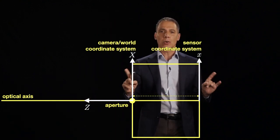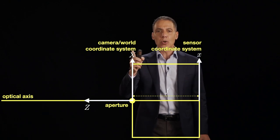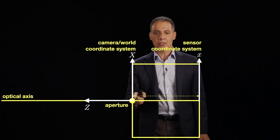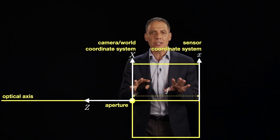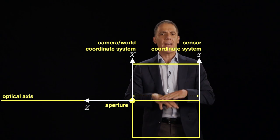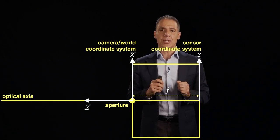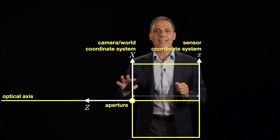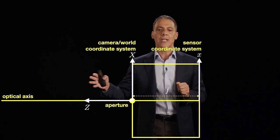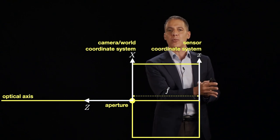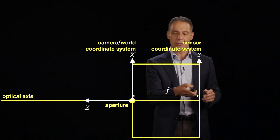We're going to have two coordinate systems. Notice I'm in a two-dimensional world here — I've dropped the width dimension. We're going to do everything in 2D, and then I'll show you this generalizes to 3D very easily. Think of flat land: there are only two dimensions in the physical world, which means the sensor is one-dimensional. We'll generalize to a 3D world and 2D sensor in a bit.